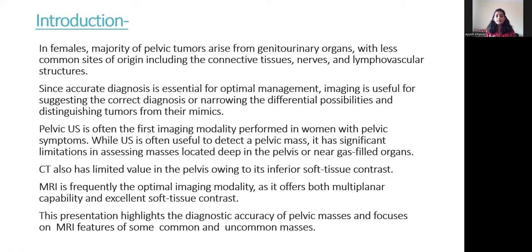Pelvic ultrasound is often the first imaging modality performed in women with pelvic symptoms. While ultrasound is useful to detect a pelvic mass, it has significant limitations in assessing masses located deep in the pelvis or near gas-filled organs. CT also has limited value in the pelvis owing to its inferior soft tissue contrast. MRI is frequently the optimal imaging modality as it offers both multi-planar capabilities and excellent soft tissue contrast, highlighting the diagnostic accuracy of pelvic masses.